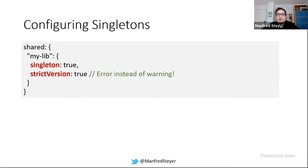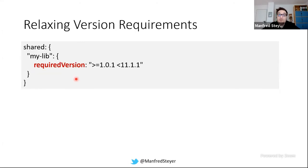You can also say you only want to load one version of a library, and if there's no highest compatible version, throw an error or emit a warning. This is done in webpack configuration by defining the lib as a singleton and setting strictVersion: true, which throws an error if no compatible version is found. Without strictVersion: true, you'd just get a warning. You can also relax required versions — specify that even though you need version 10, it also works with everything in a certain range, say between version 1.something and 11.something. Module Federation is really flexible when it comes to things like this.